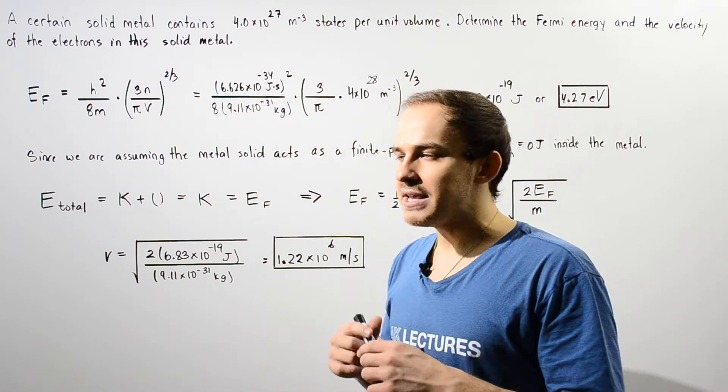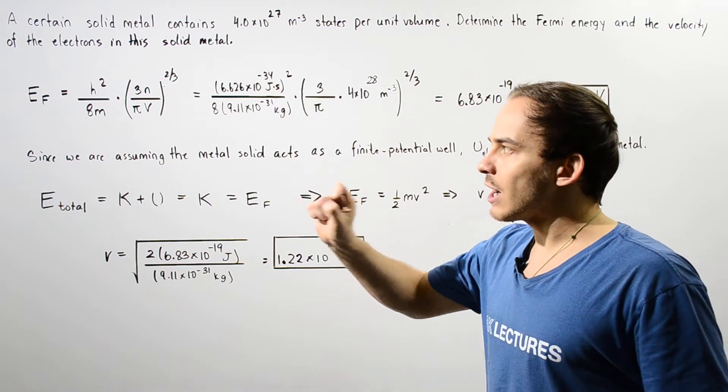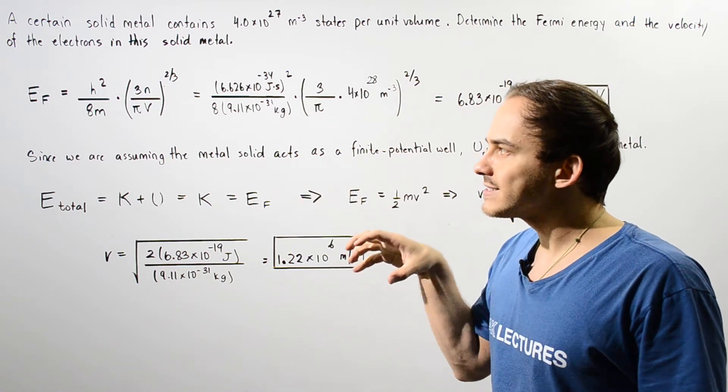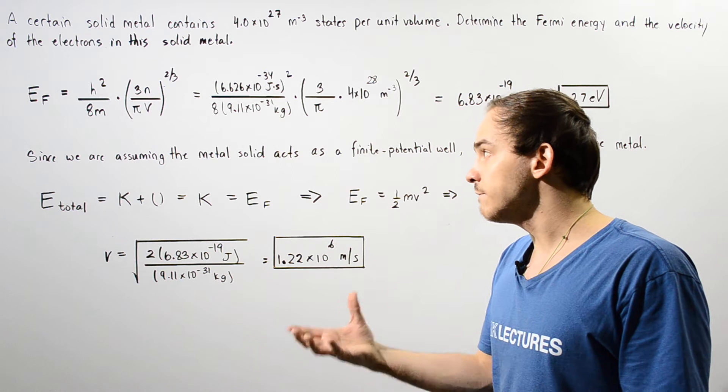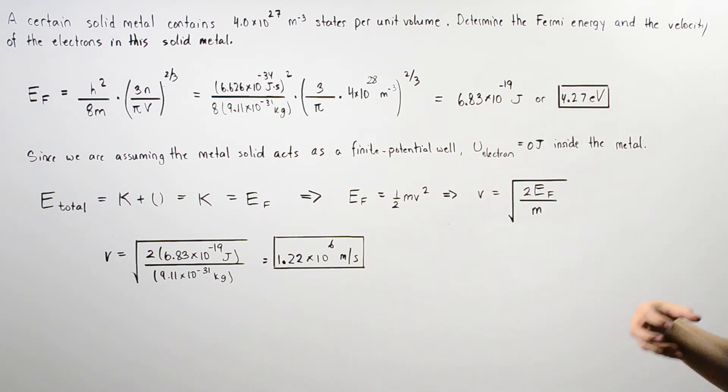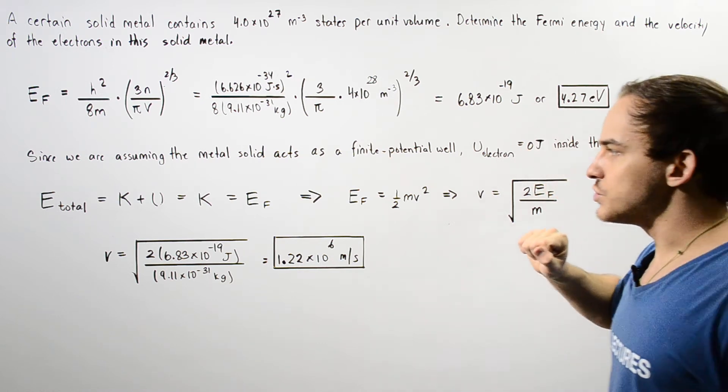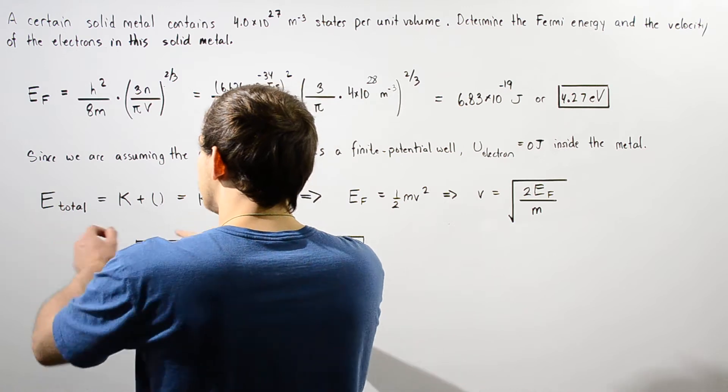So we can use this to solve for our velocity. The total energy of the electron is equal to the sum of the kinetic and the potential energy. Since potential energy is zero, the total is equal to the kinetic energy.